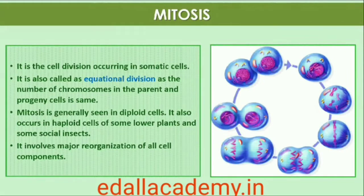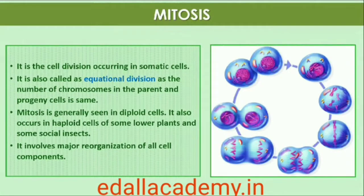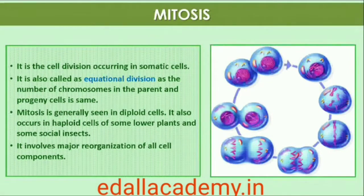The M Phase is the most dramatic period of the cell cycle, involving a major reorganization of virtually all components of the cell. Since the number of chromosomes in the parent and progeny cells is the same, it is also called equational division. Though for convenience mitosis has been divided into four stages of nuclear division, it is very essential to understand that cell division is a progressive process and very clear-cut lines cannot be drawn between various stages.